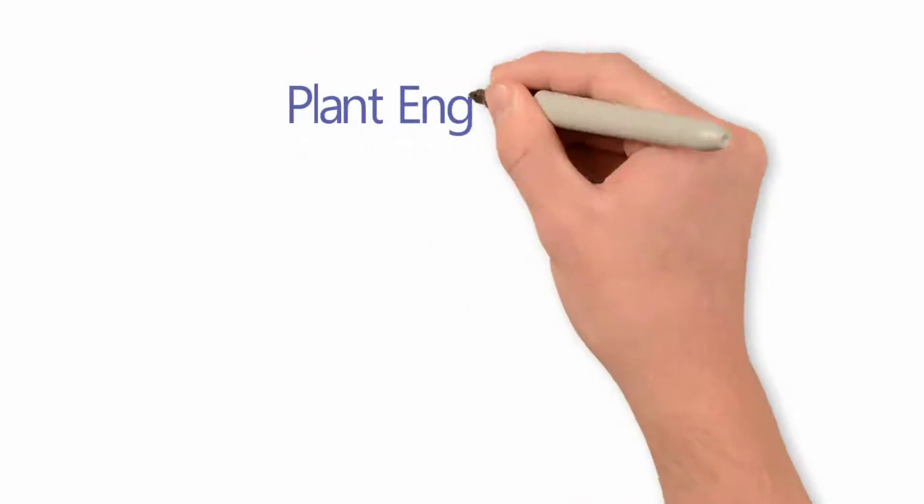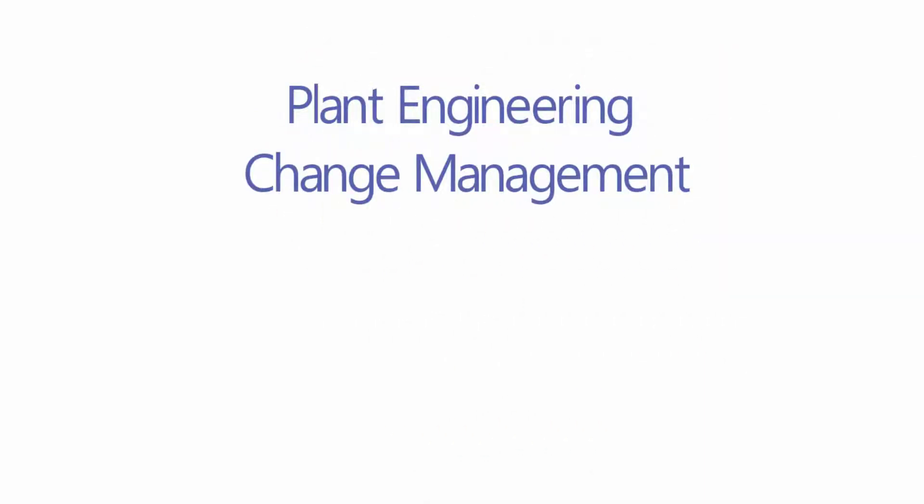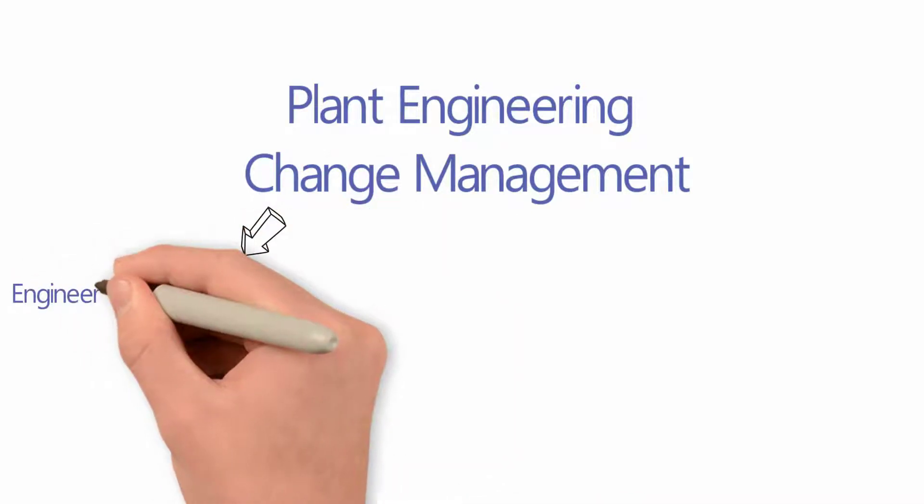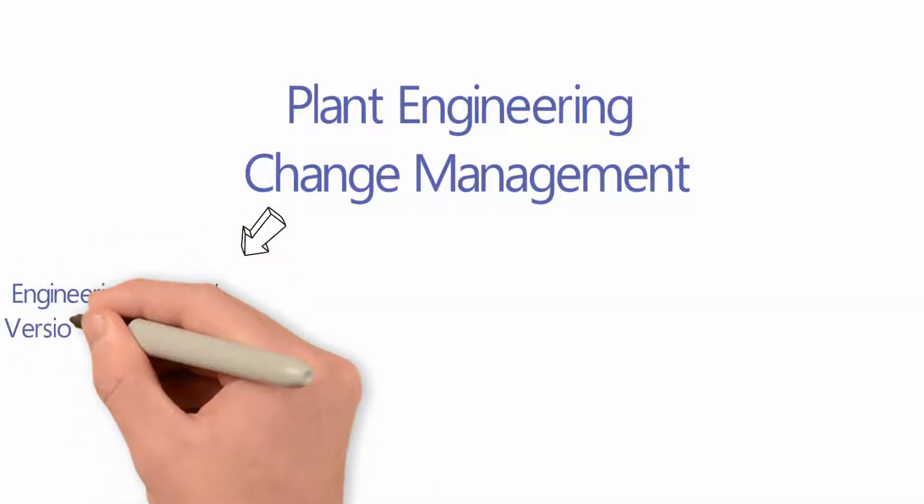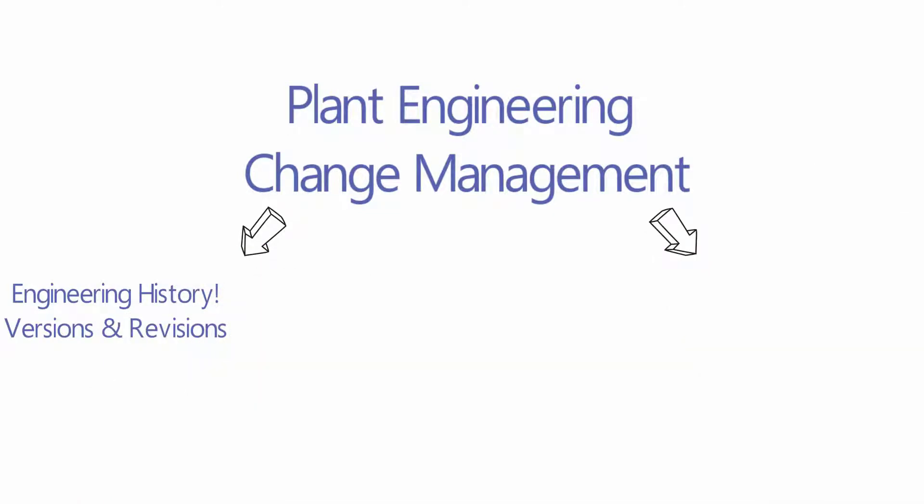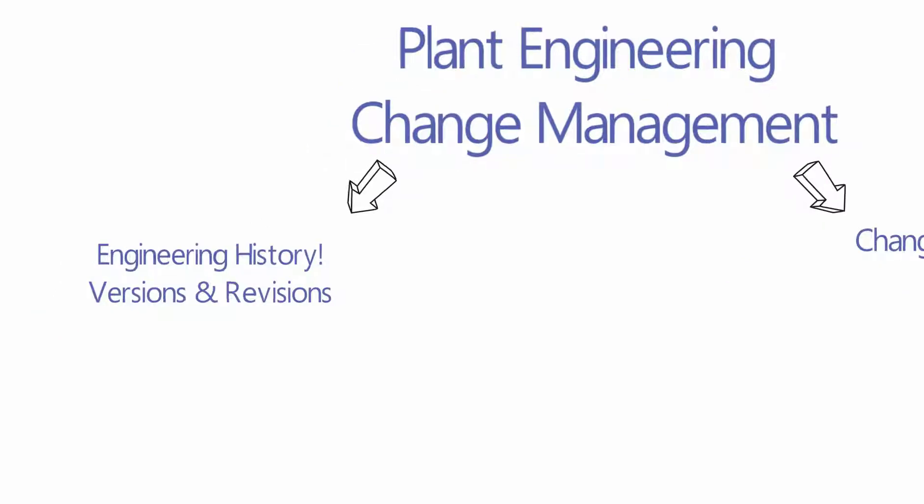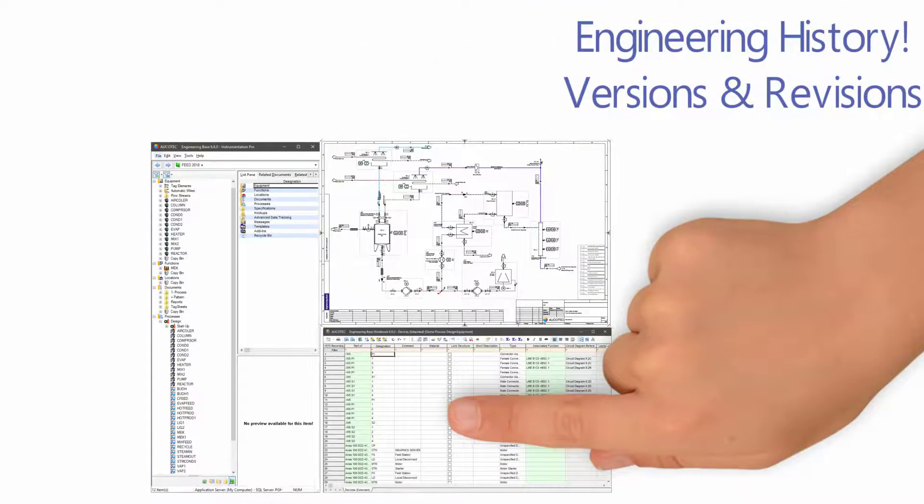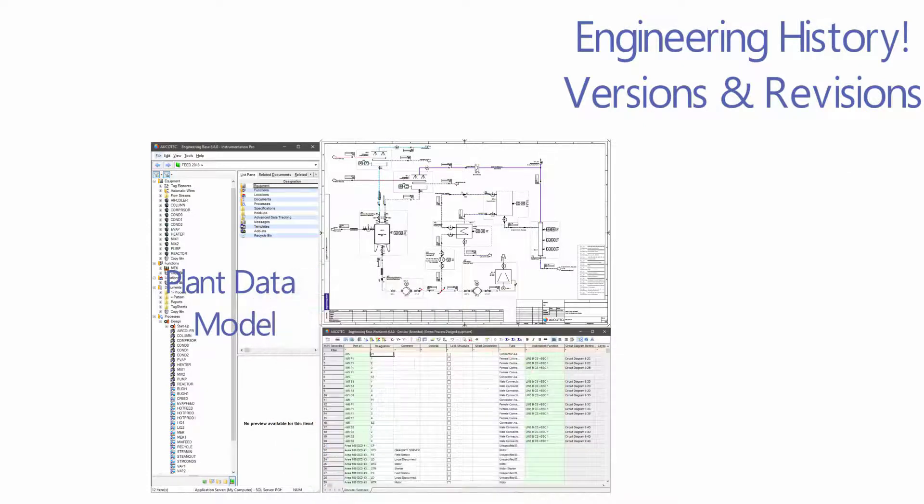Change management has two main categories. The first one is to get information about the changes that happened before and track the history, and the second one is to suggest changes to happen in future. In EB there are three main elements where changes can be viewed: plant's data model, data model representation on diagrams, and lists view of the data model.